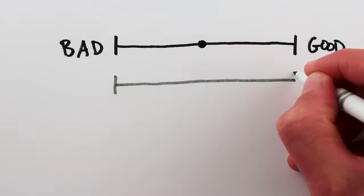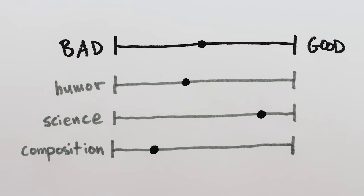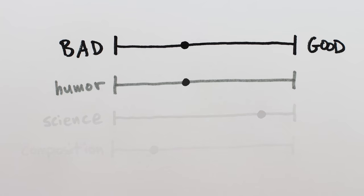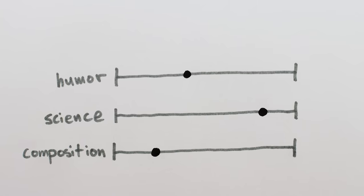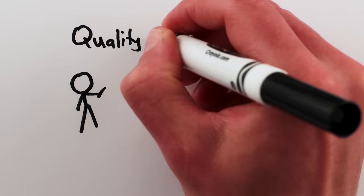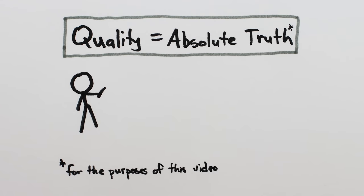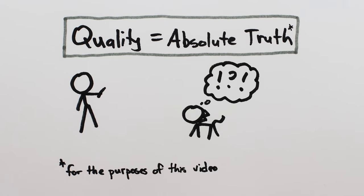So the overall quality of something will be affected by how strongly you weigh the importance of the different possible axes, whether you care more about humor, or scientific accuracy, or beautiful composition. But we're going to focus on the quality of each axis independently, and we'll pretend that quality is an absolute property of the video itself, independent of anyone's personal viewpoint.